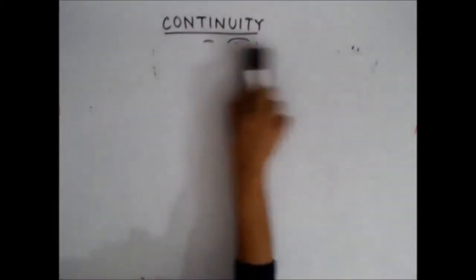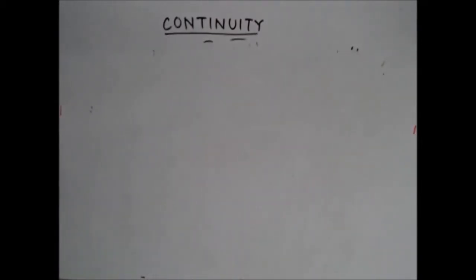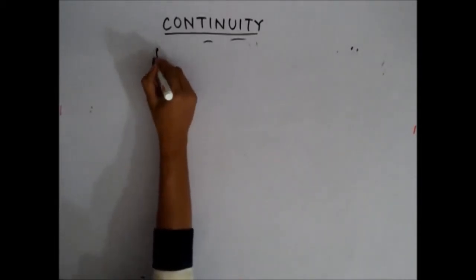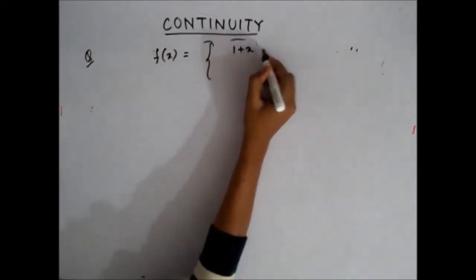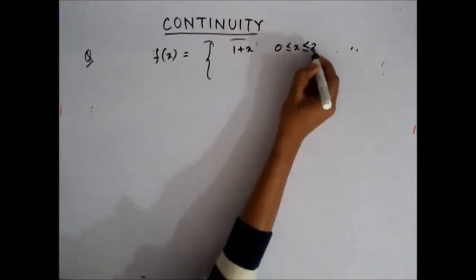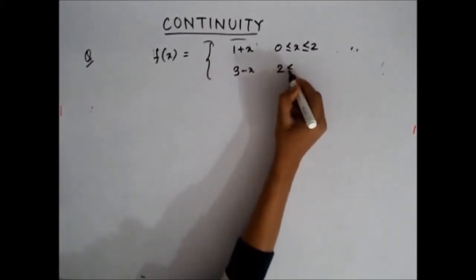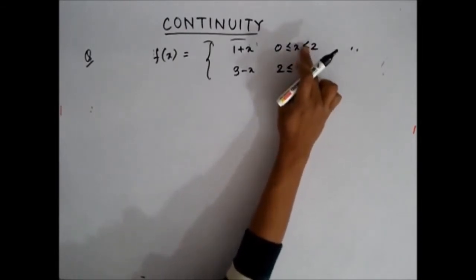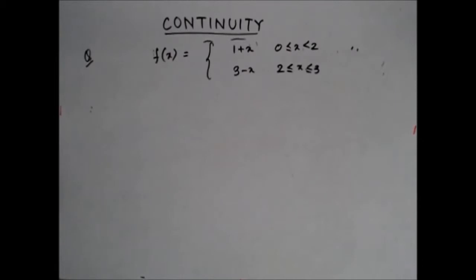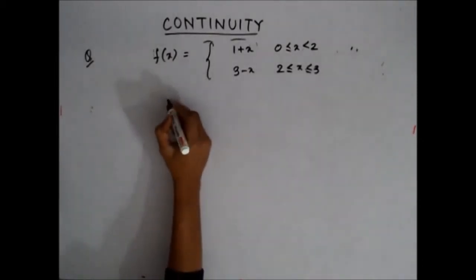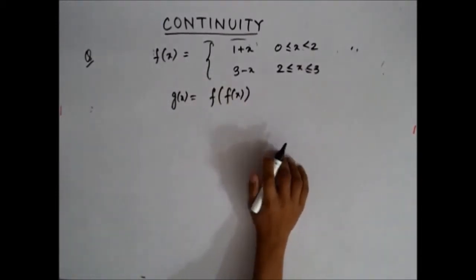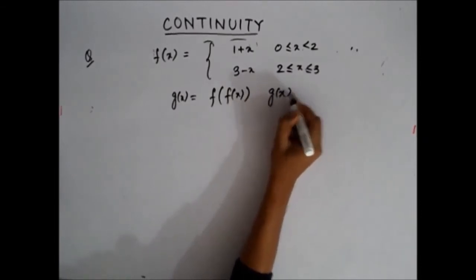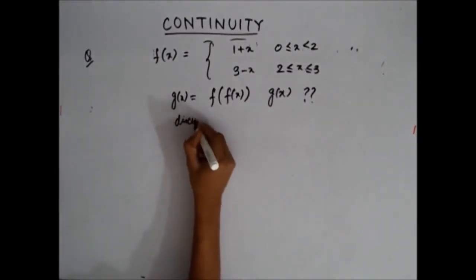Moving on to the next question. This next question is a bit lengthy since it deals with composite functions. f(x) is given by 1 + x when x lies between 0 and 2, and 3 − x when x lies between 2 and 3. The question asks: g(x) = f(f(x)). You are asked to find g(x) and then discuss the continuity of g(x).